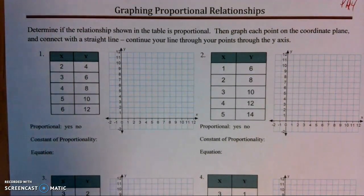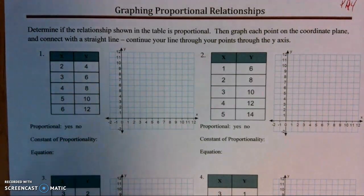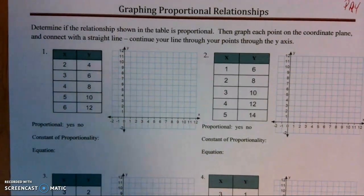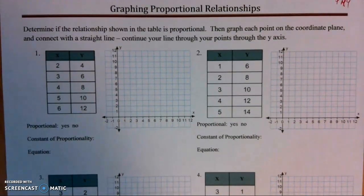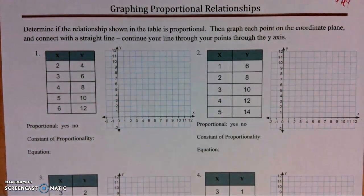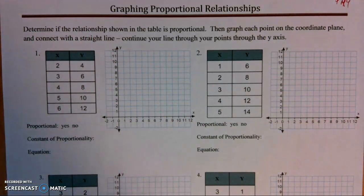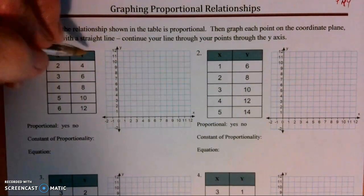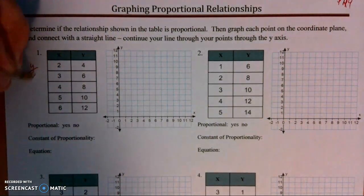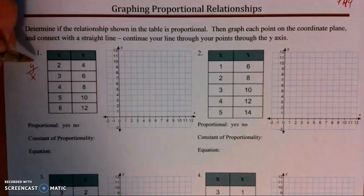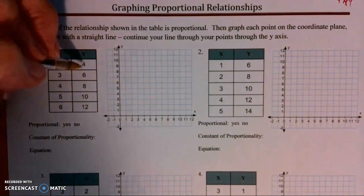We're going to determine if the relationship shown in the table is proportional, then graph each point on the coordinate plane and connect with a straight line. Continue your line through the y-axis. Remember, when we look at a chart we always do y divided by x.